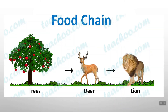Look at this food chain: tree → deer → lion. The tree is the producer because it makes its own food using sunlight, carbon dioxide, and water. The deer is the herbivore because it feeds on plants. The lion is the carnivore because it feeds on other animals. The deer is the prey and the lion is the predator — their relationship is called predation.